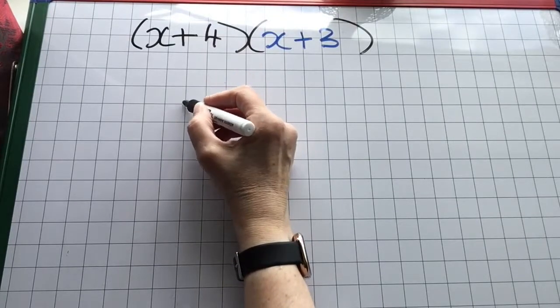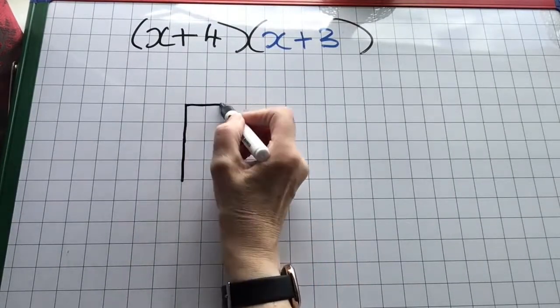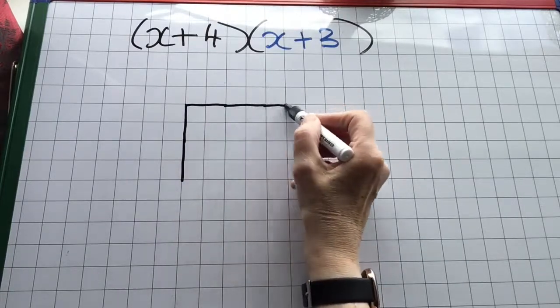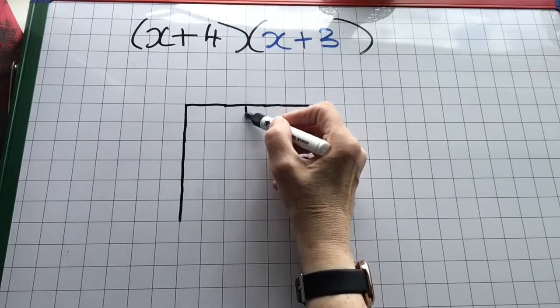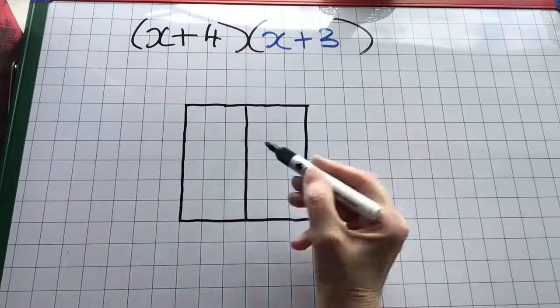I've got two expressions here. One is x plus 4 written in black and it's got two terms in it. The other is x plus 3 written in blue and it's got two terms in it. So I make a 2 by 2 grid.